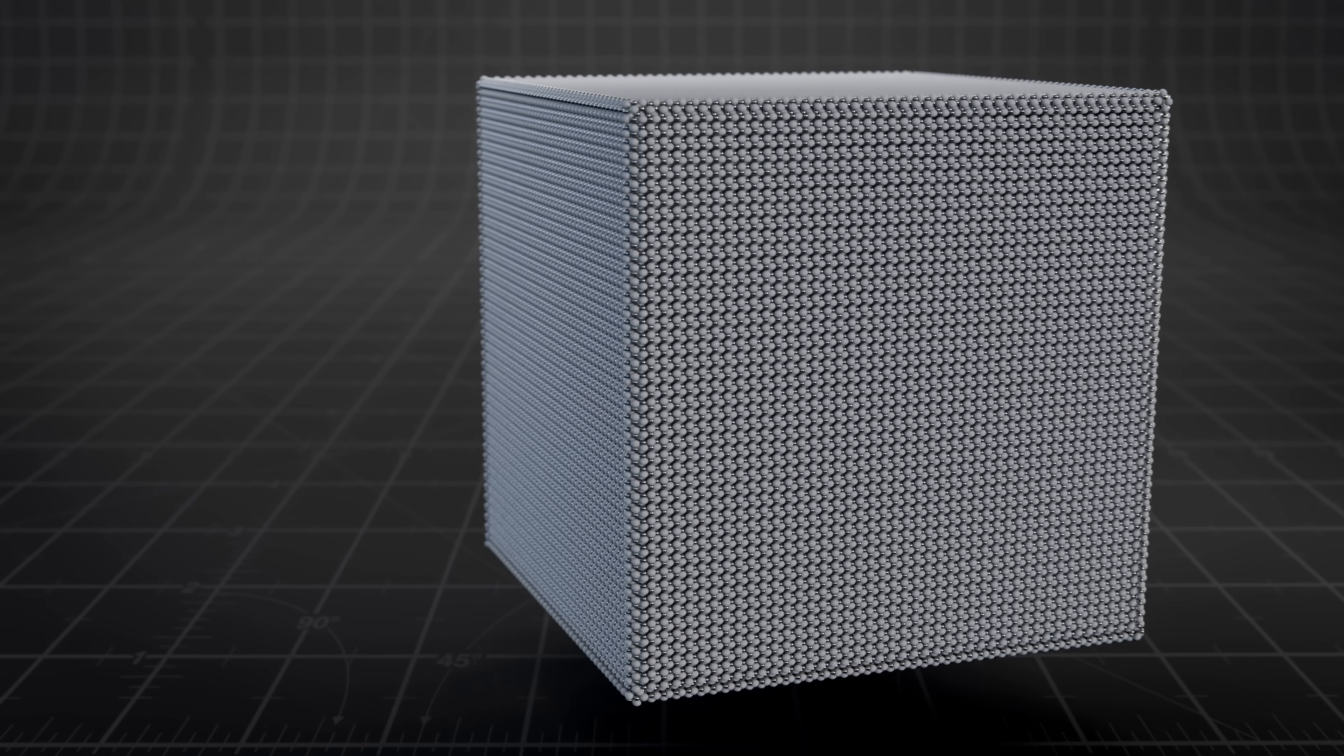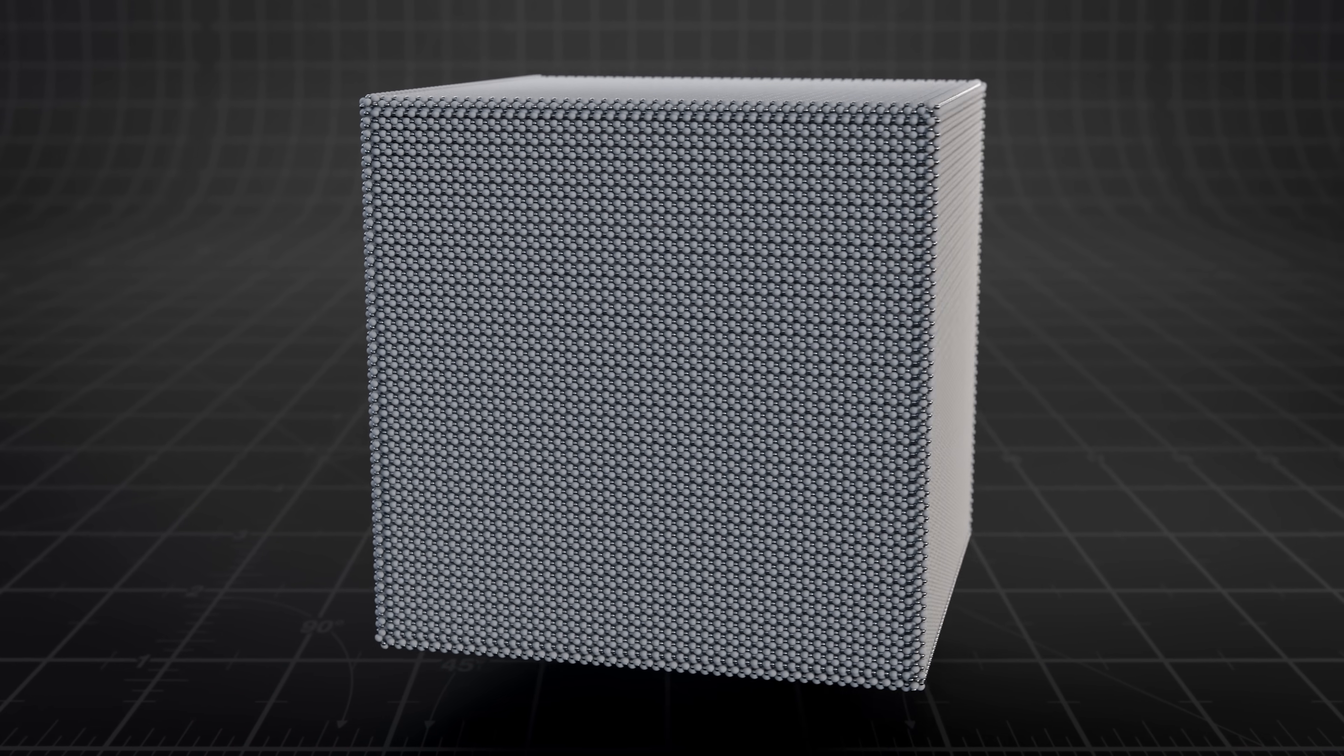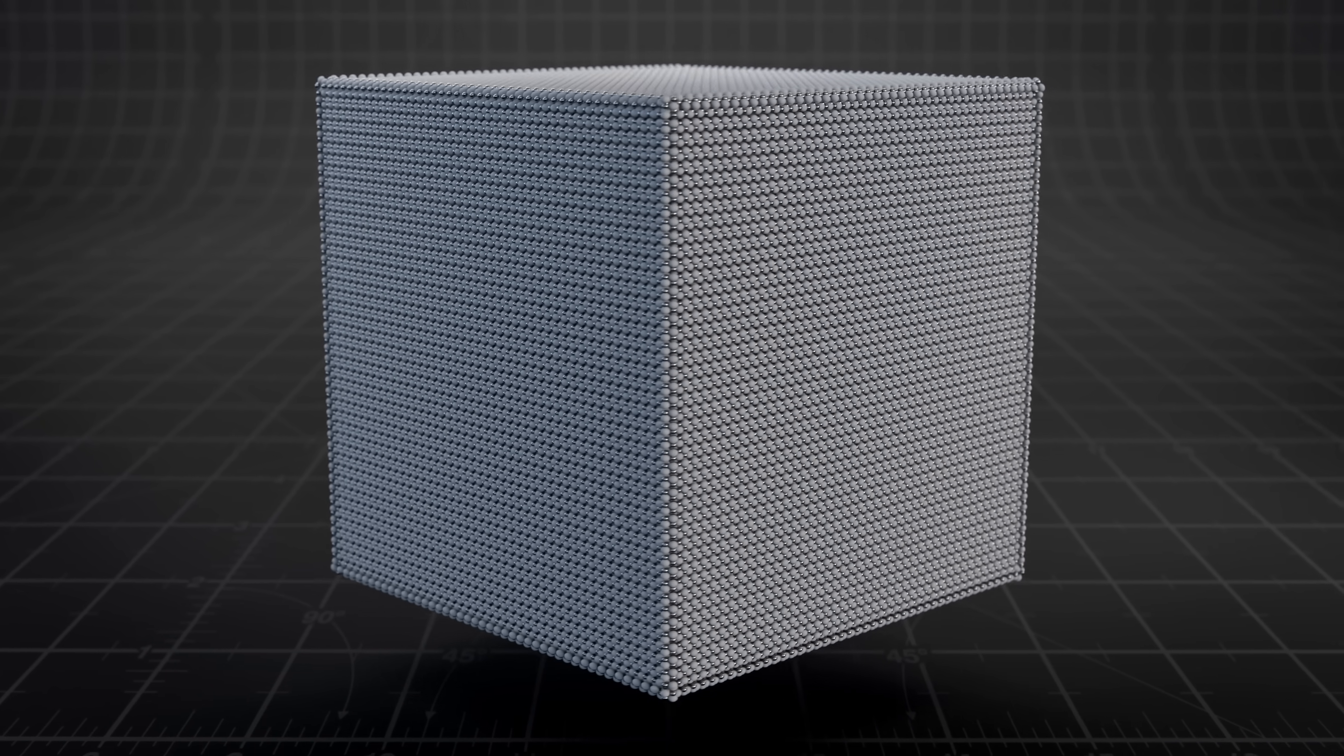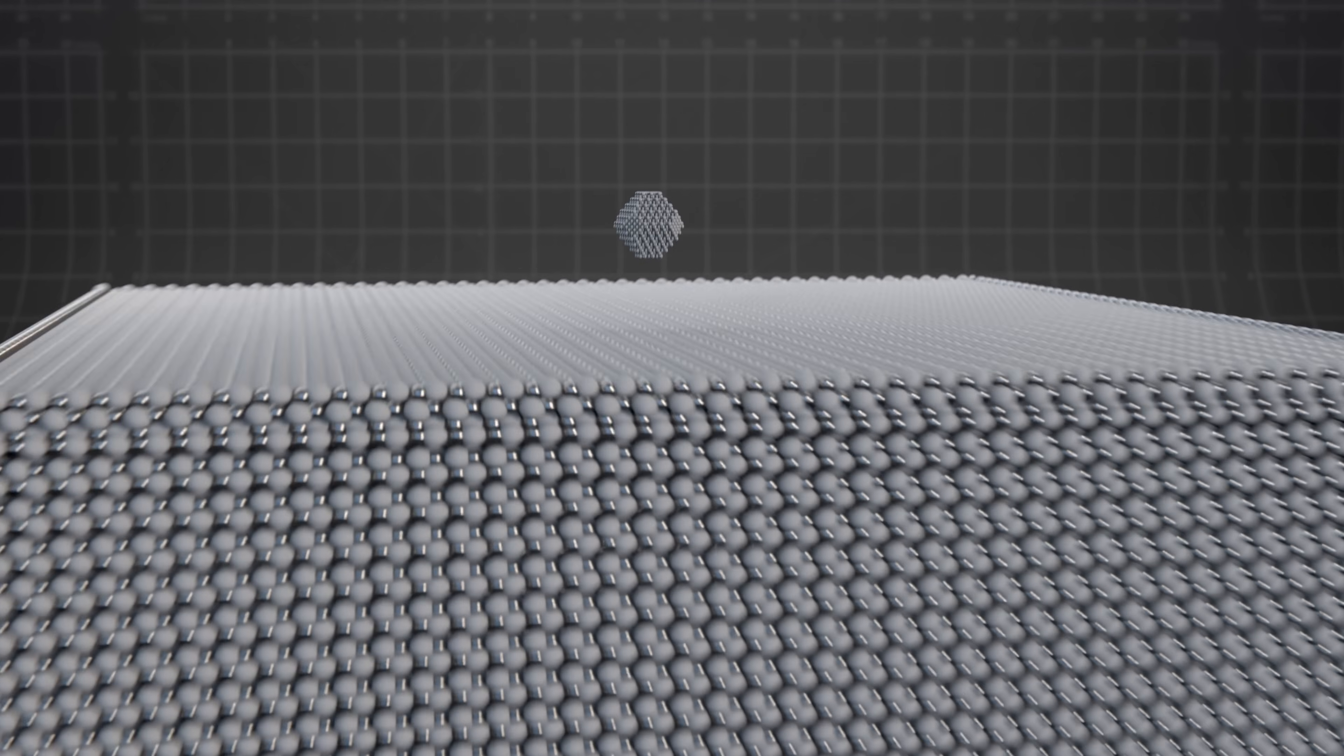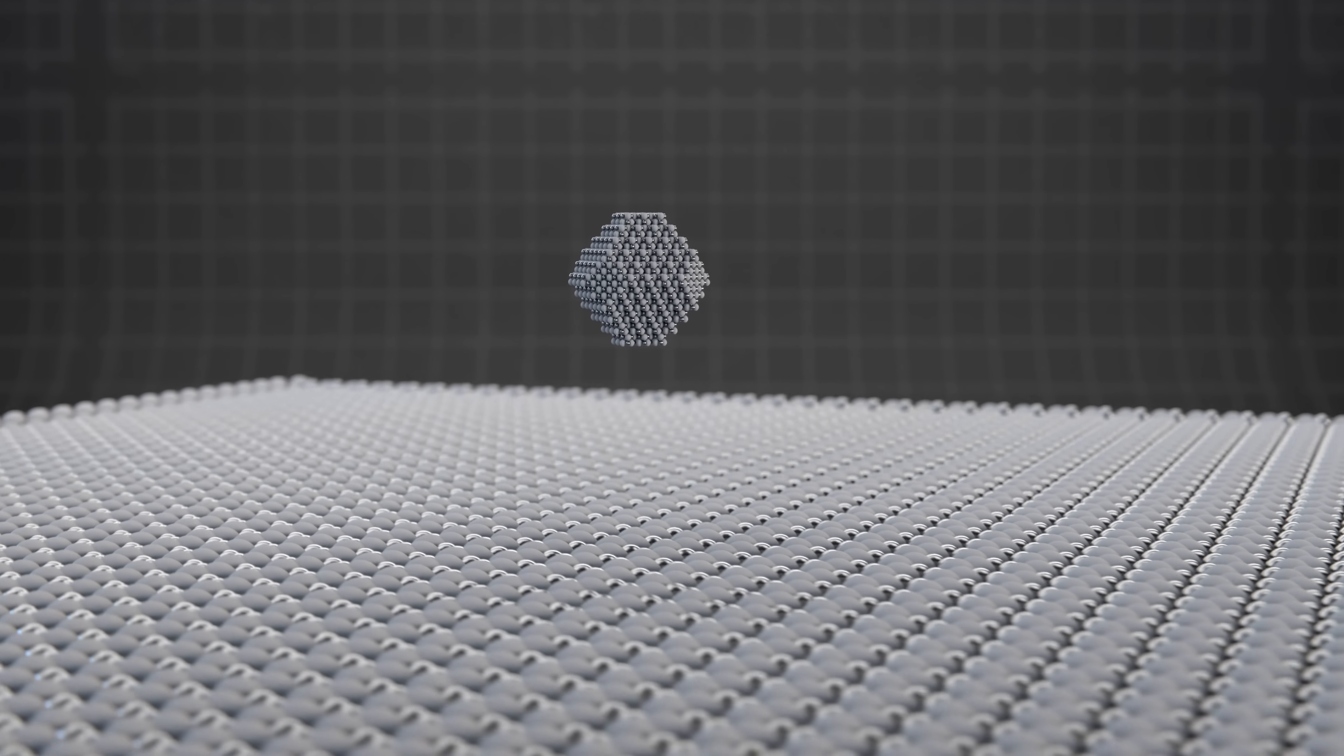But that changes when the pieces become so small that quantum effects start to take over. You might remember from chemistry class that in a crystalline material, atoms are arranged in recurring 3D patterns known as a crystal lattice. A lattice usually goes on and on, always repeating itself. Meanwhile, a quantum dot is just a tiny segment of that same structure, but it's only a few nanometers in diameter.